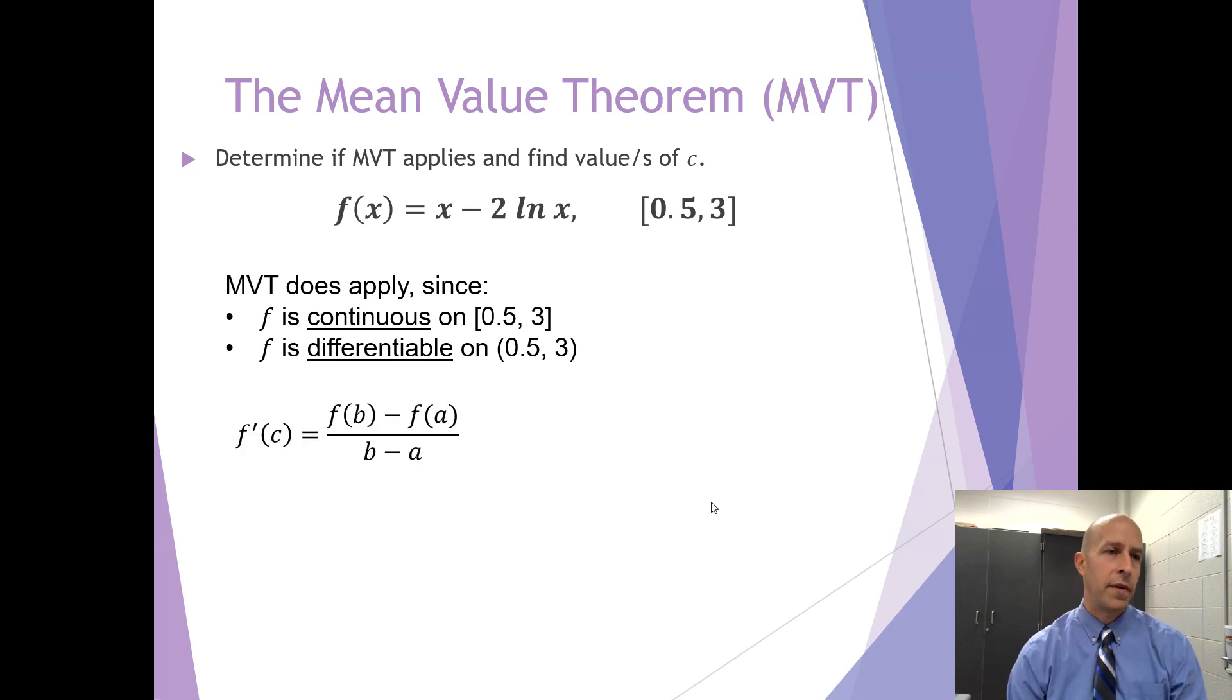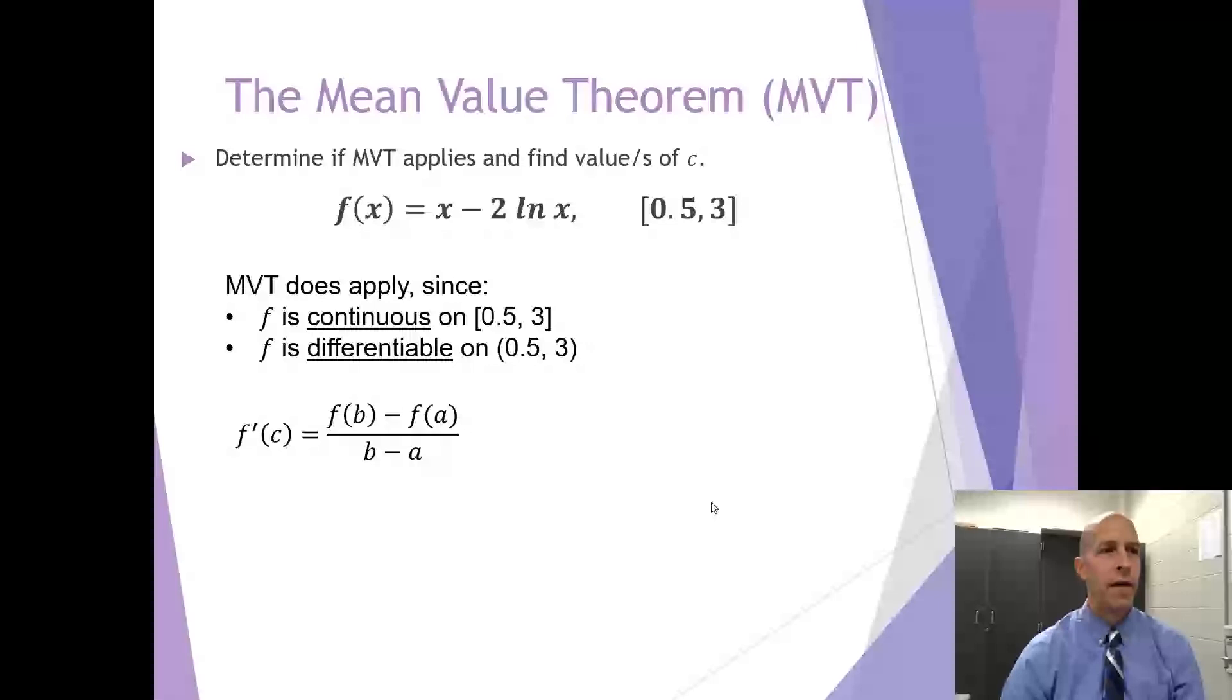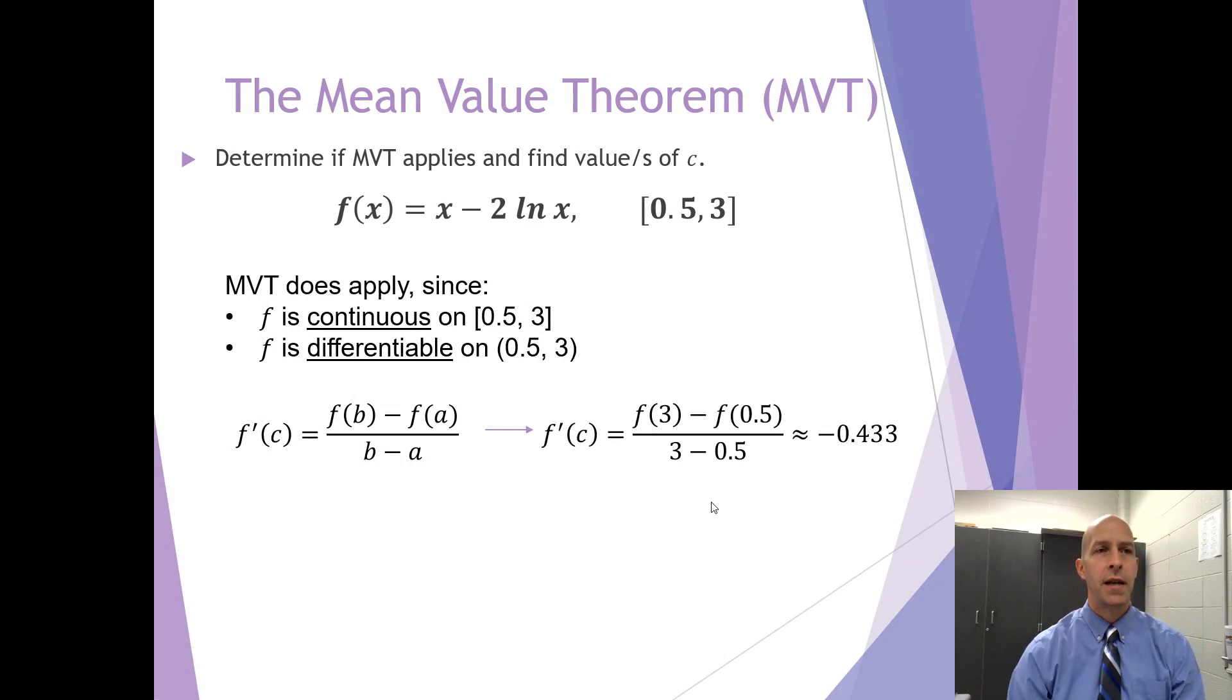This is the formula for the mean value theorem, which is that F prime of C is equal to F of B minus F of A divided by B minus A. So we can convert that using the information in this problem. The right-hand side of the equation is approximately negative 0.433.